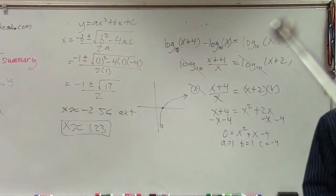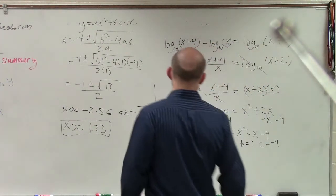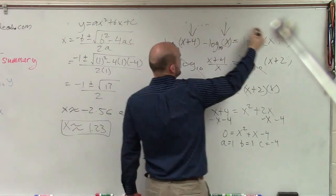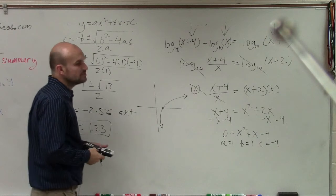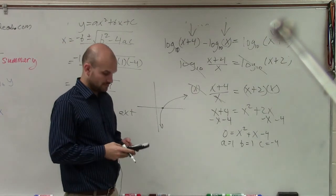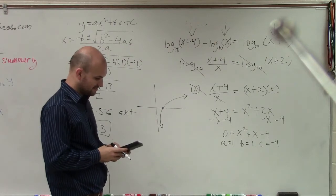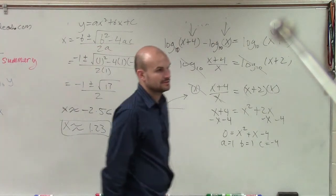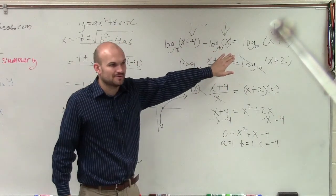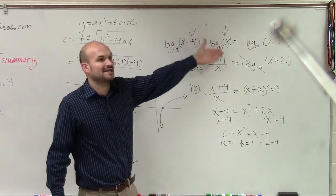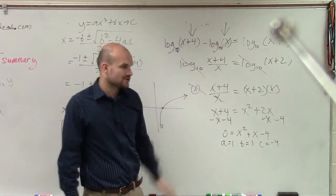That one's not extraneous. Because you can plug that in into each one of these logarithms, and you'll get an answer. What makes negative 2.56? Take your calculator. Take log of negative 2.56. Tell me what the answer is. Right. You can't take the logarithm of a negative value. So if you plug in a number, and it gives you a logarithm of a negative number, that solution is extraneous.